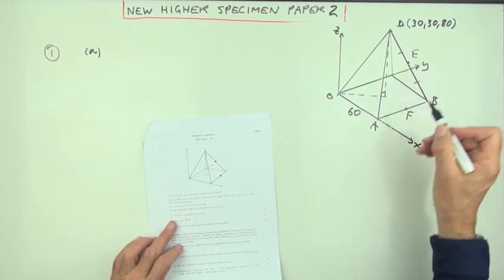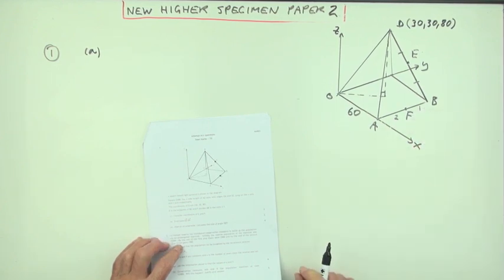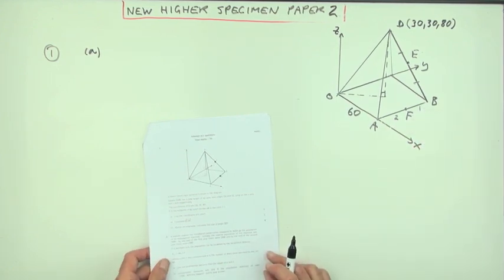E is the midpoint, and F divides AB in the ratio of 2 to 1. First part, find the coordinates of E and F.